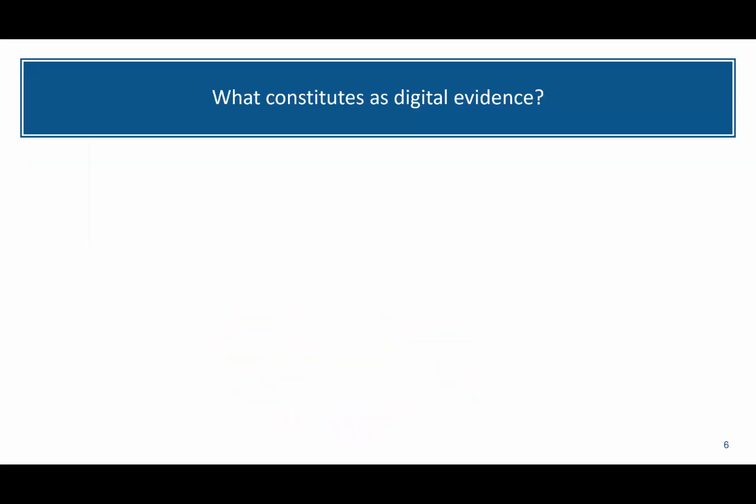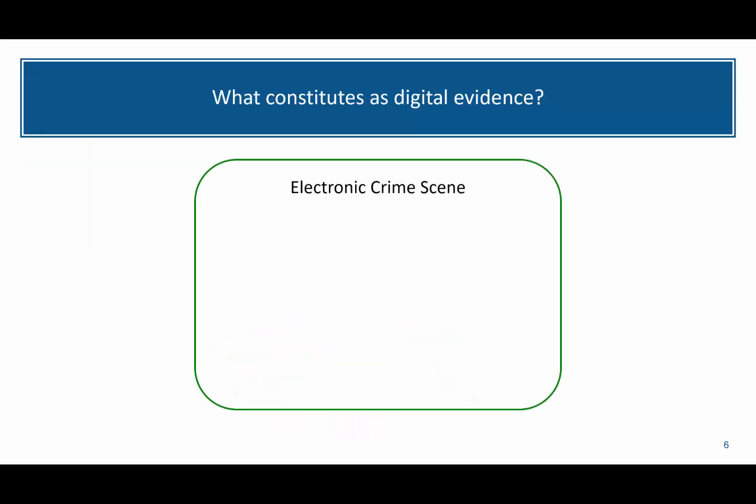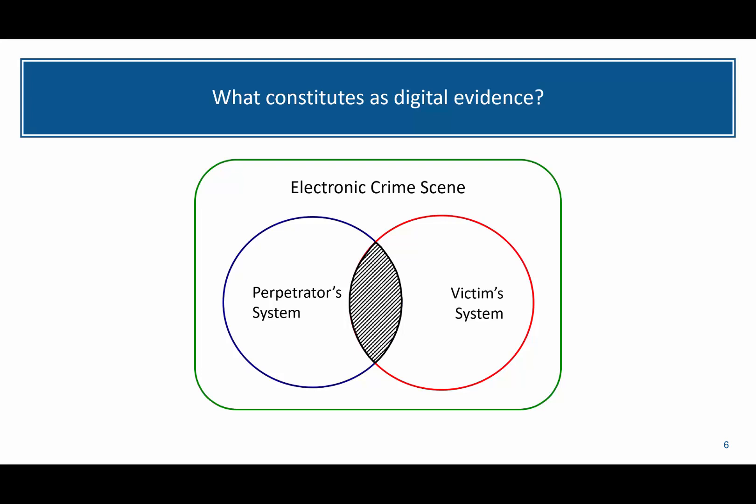What constitutes digital evidence? In the electronic crime scene, we have a perpetrator system and a victim system. Digital evidence is going to be any overlap between the perpetrator system and the victim system. A perpetrator could impact multiple systems, and we may not even have access to the perpetrator system, so we have to diagnose where that overlap took place in order to reconstruct our digital evidence.